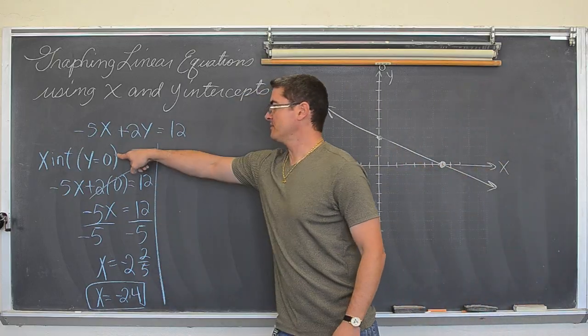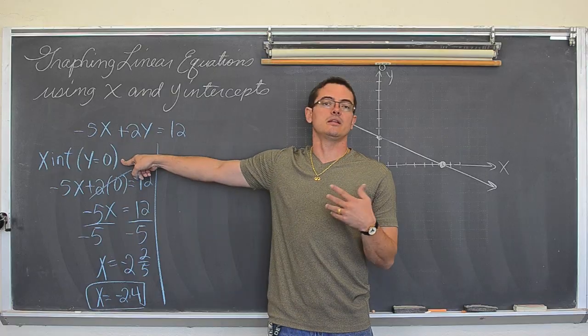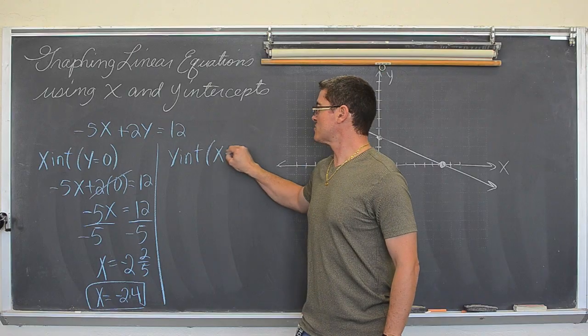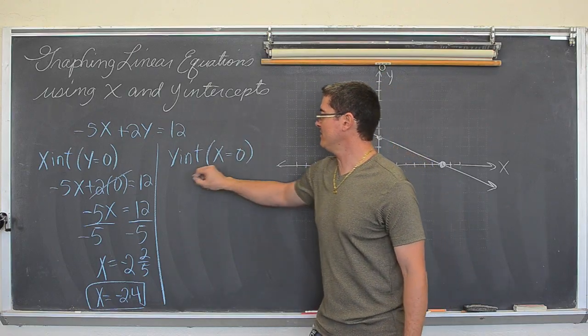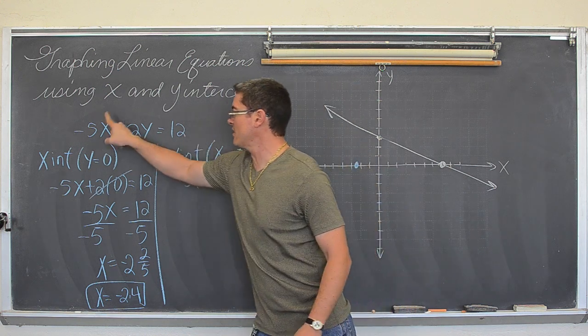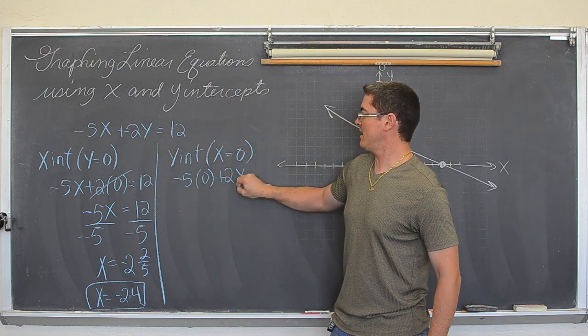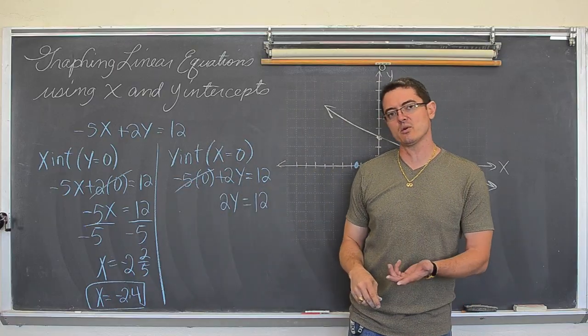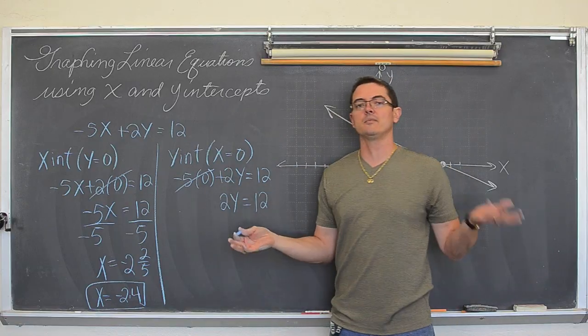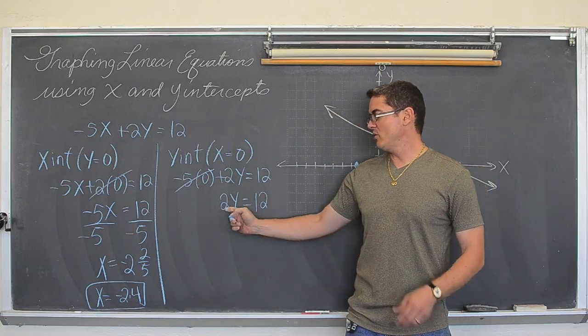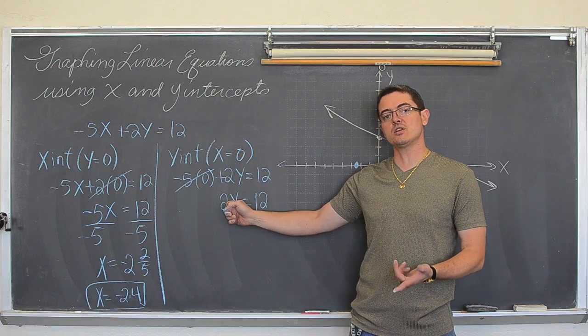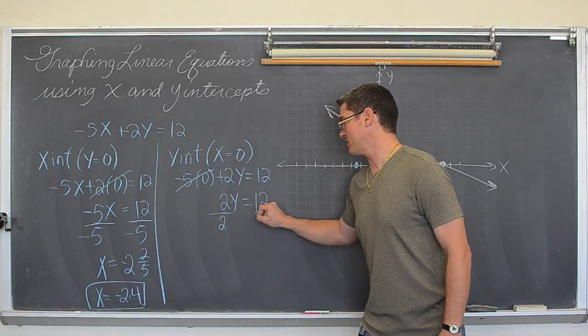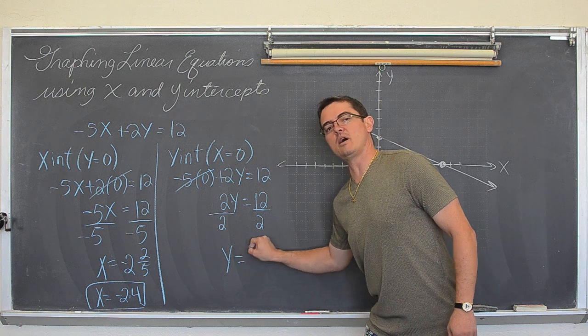What about the y intercept? Well, if you set y equal to 0 for the x intercept, you let x equal to 0 for the y intercept. So, y intercept is when x equals 0. And, well, that is negative 5 times 0 for x plus 2y equals 12. 2y equals 12. Because multiplying by 0 gives you 0. And again, when you add by 0, nothing happens. So, we don't need to write it. And you undo multiplication with division. We are trying to solve for y. We are trying to get 2 away from y to the other side. The opposite of multiplication is dividing. So, we divide both sides by 2 and y equals 6.